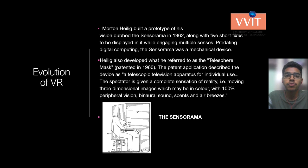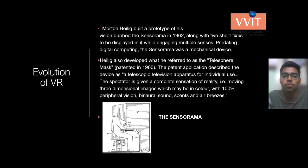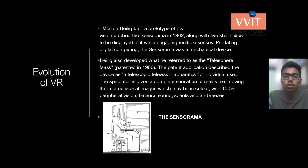Morton Heilig built a prototype of his vision called the Sensorama in 1962, along with 5 short films to be displayed in it while engaging multiple senses. Prior to digital computing, the Sensorama was a mechanical device. Heilig also invented what he referred to as the Telesphere Mask. The patent application describes the device as a telescopic television apparatus for individual use, giving the spectator a complete sensation of reality — moving three-dimensional images in color with 100% peripheral vision, unilateral sound, and sense of air breezes. Here we can see a picture of the Sensorama built by Morton Heilig.